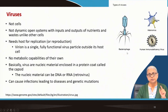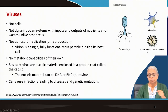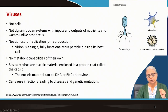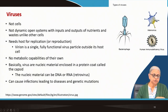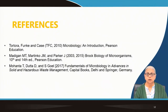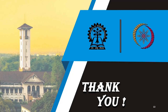A bacteriophage is a virus that infects bacterial cells. Examples of human viruses include adenoviruses, which cause common colds, and HIV, which causes AIDS — autoimmune deficiency syndrome. These infections can lead to diseases, genetic mutations, and cancers, all of which have been proven. That concludes this part of the lecture. Thank you.